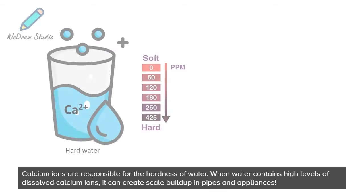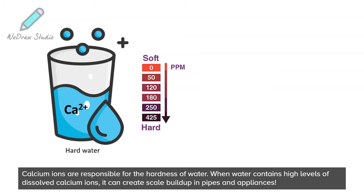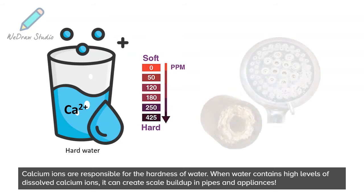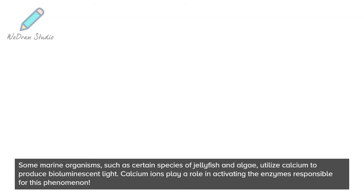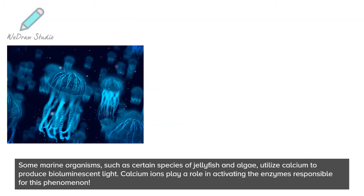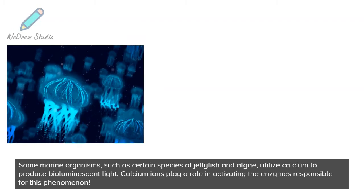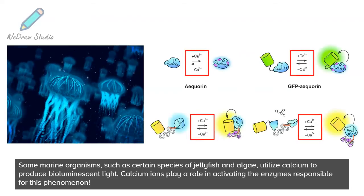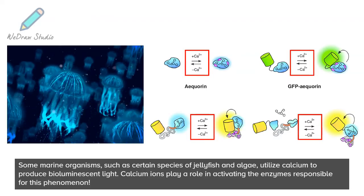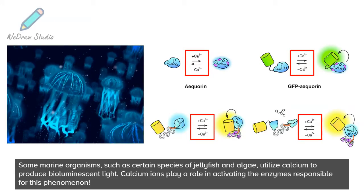Calcium ions are responsible for the hardness of water. When water contains high levels of dissolved calcium ions, it can create scale buildup in pipes and appliances. Some marine organisms, such as certain species of jellyfish and algae, utilize calcium to produce bioluminescent light. Calcium ions play a role in activating the enzymes responsible for this phenomenon.